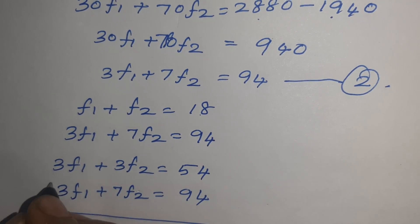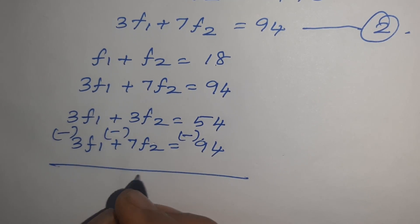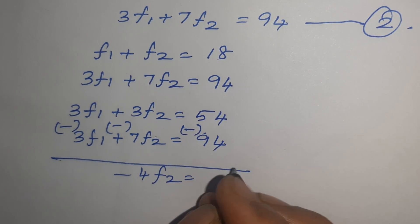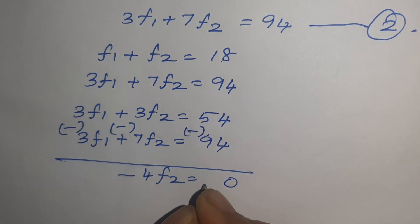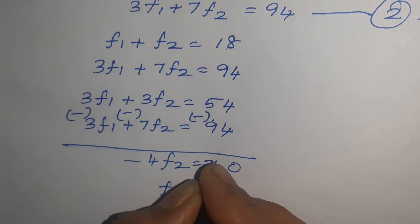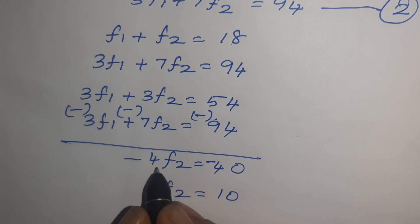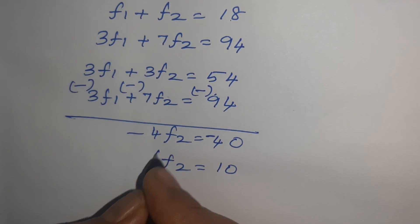Subtracting, you have to change the sign. Here minus 4F2 equals 94 minus 54, 9 minus 5 equals 4, so 40. F2 equals 40 divided by 4. This equals 10.